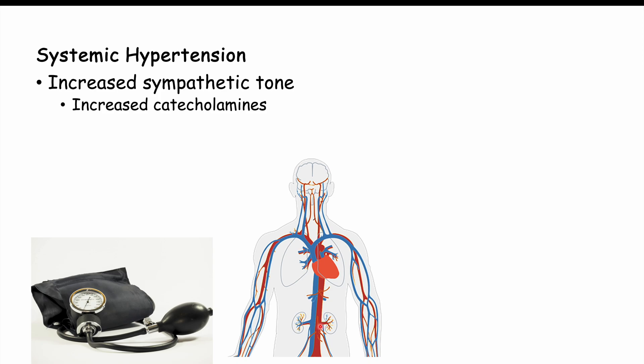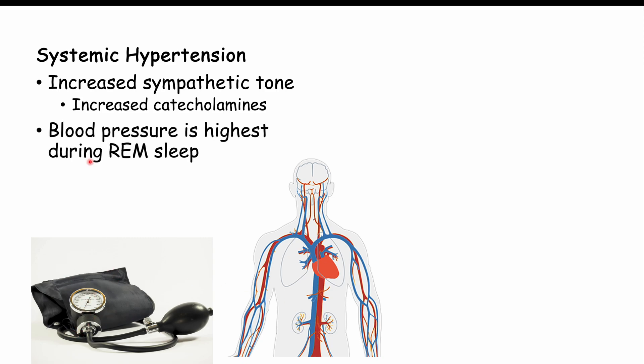If we monitor a patient's systemic blood pressure throughout the entire day including during sleep, blood pressure is highest during rapid eye movement sleep. This is because more episodes of sleep apnea occur during REM — when throat and neck musculature becomes too relaxed, causing more obstruction of airflow and more apneic episodes.